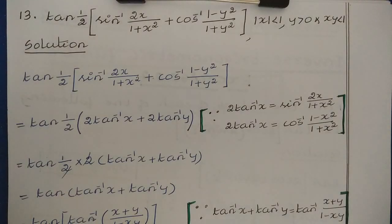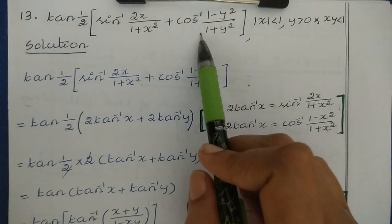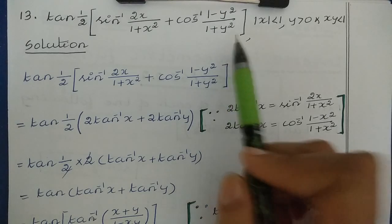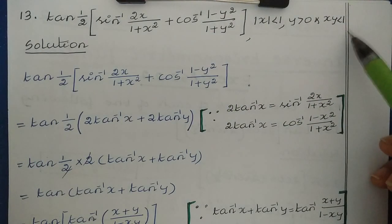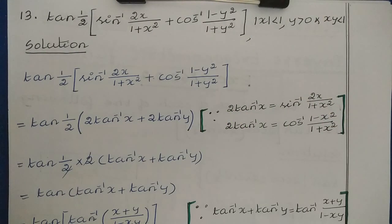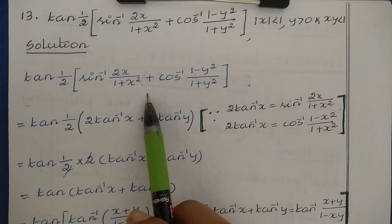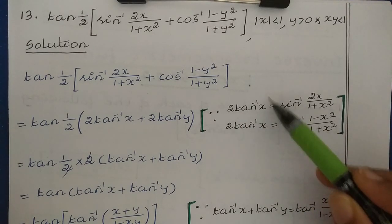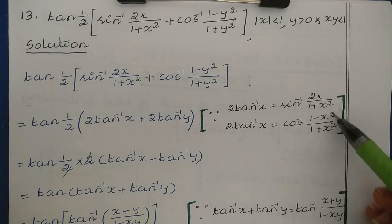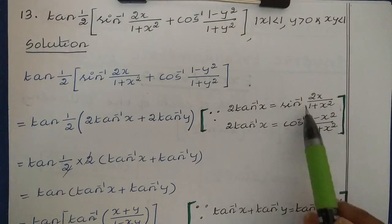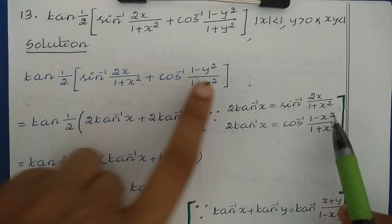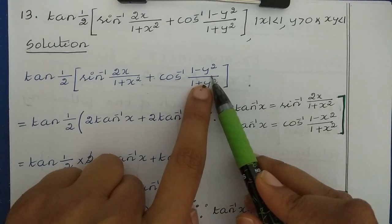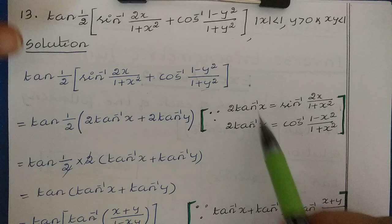Question number 13: find tan of half times (sin⁻¹(2x/(1+x²)) + cos⁻¹((1−y²)/(1+y²))), where |x| < 1, y > 0, and xy < 1. We use the identities: 2 tan⁻¹x = sin⁻¹(2x/(1+x²)) and 2 tan⁻¹x = cos⁻¹((1−x²)/(1+x²)).